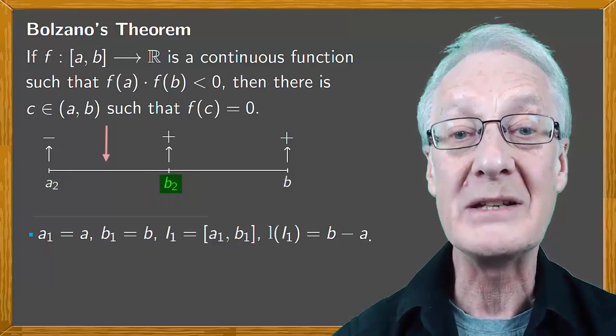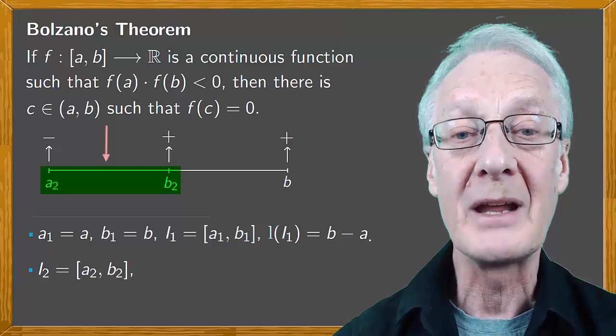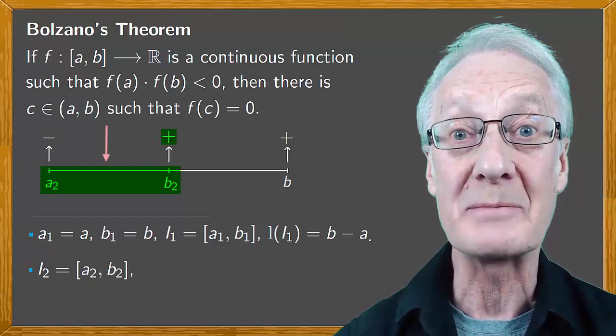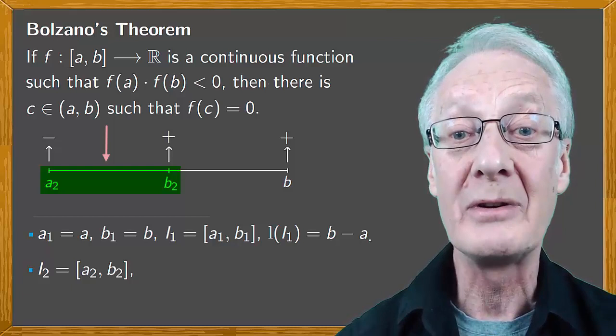At the left end the image is negative. At the right end the image is positive and the length of this interval is clearly half of the previous one, (b - a)/2.